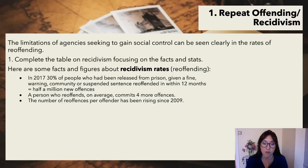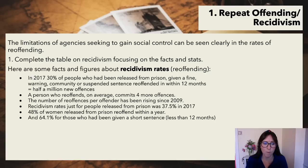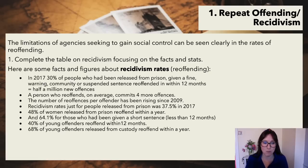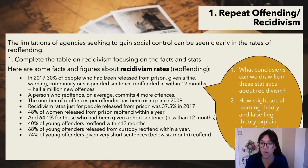The number of re-offences per offender has been rising since 2009. Recidivism rates just for people released from prison was 37.5% in 2017. 48% of women released from prison re-offend within a year. 64.1% for those given a short sentence of less than 12 months. 40% of young offenders re-offend within 12 months, 68% of young offenders released from custody re-offend within a year, and 74% of young offenders given a very short sentence below 6 months re-offend.